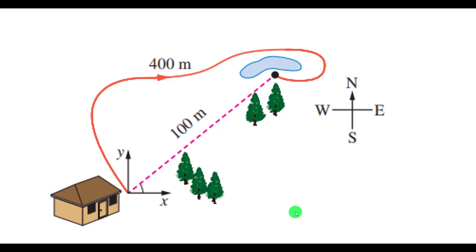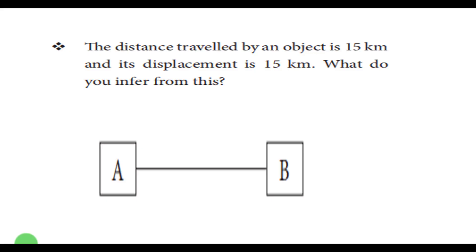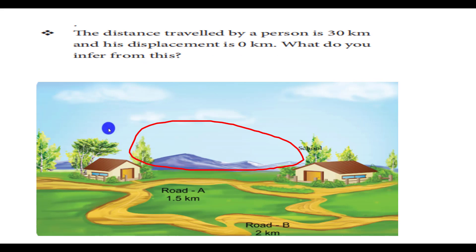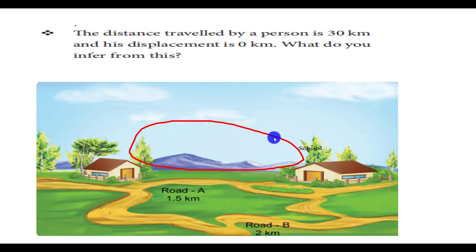The distance traveled by an object is 15 km and its displacement is 15 km — what do you infer? Distance and displacement are both the same, so there won't be any extra path traveled and the shortest distance is 15 km. Now, the distance traveled by a person is 30 km and his displacement is 0 km — what do you infer? The person may go to some other place and return to the same starting point, so there is no displacement. You are going to school from your house in the morning and returning to the same house in the evening — the displacement is zero.